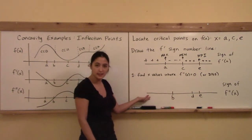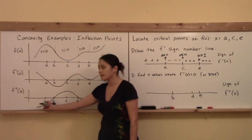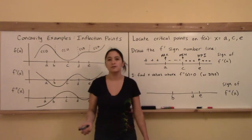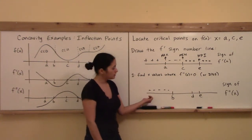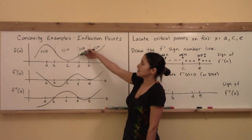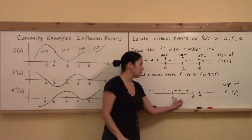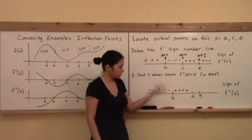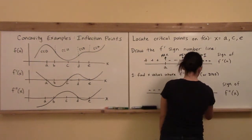For x less than B, looking at the second derivative graph, it's all negatively valued — and the original function is behaving in a concave-down manner. Both lead us to conclude the second derivative is negative there. Between B and D the second derivative is positive and the function is concave up, so we get plusses. Between D and E it's negatively signed, so minuses. And after E it's positively signed.